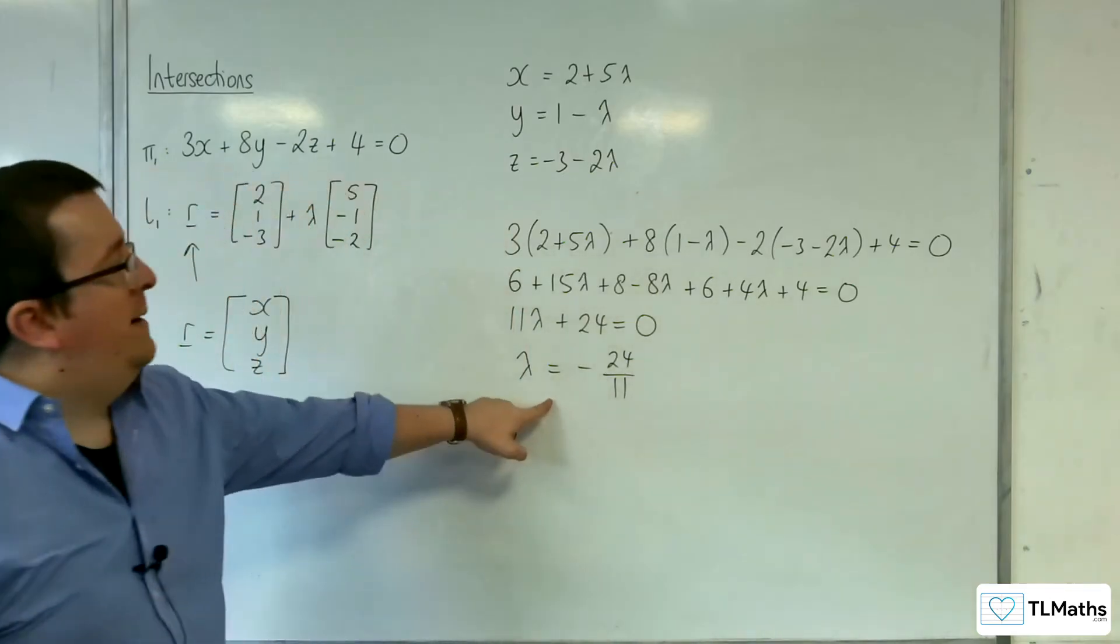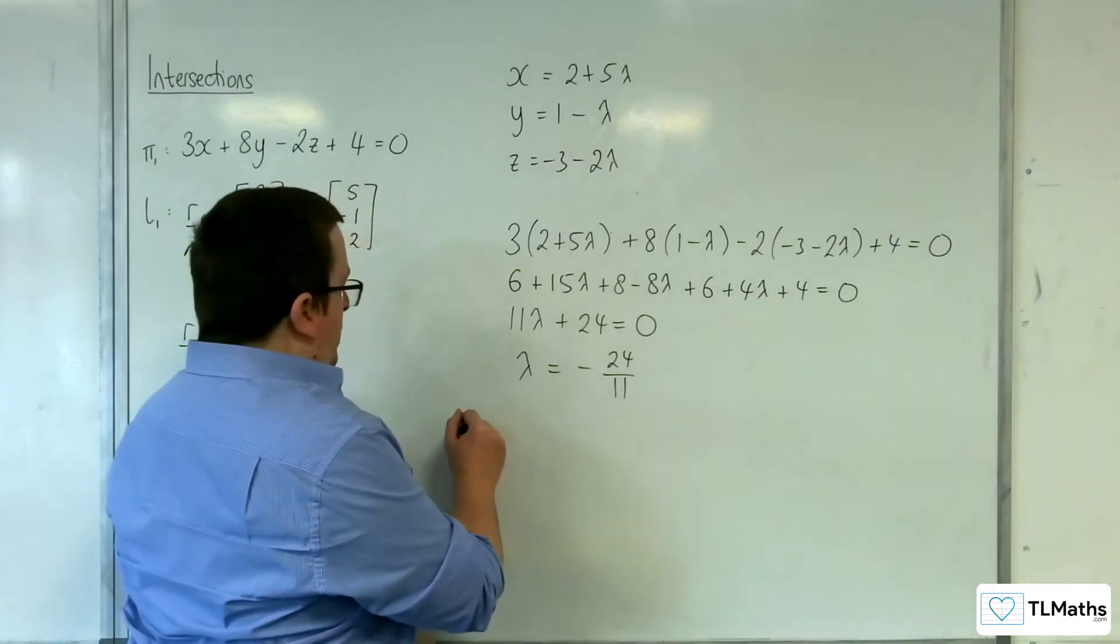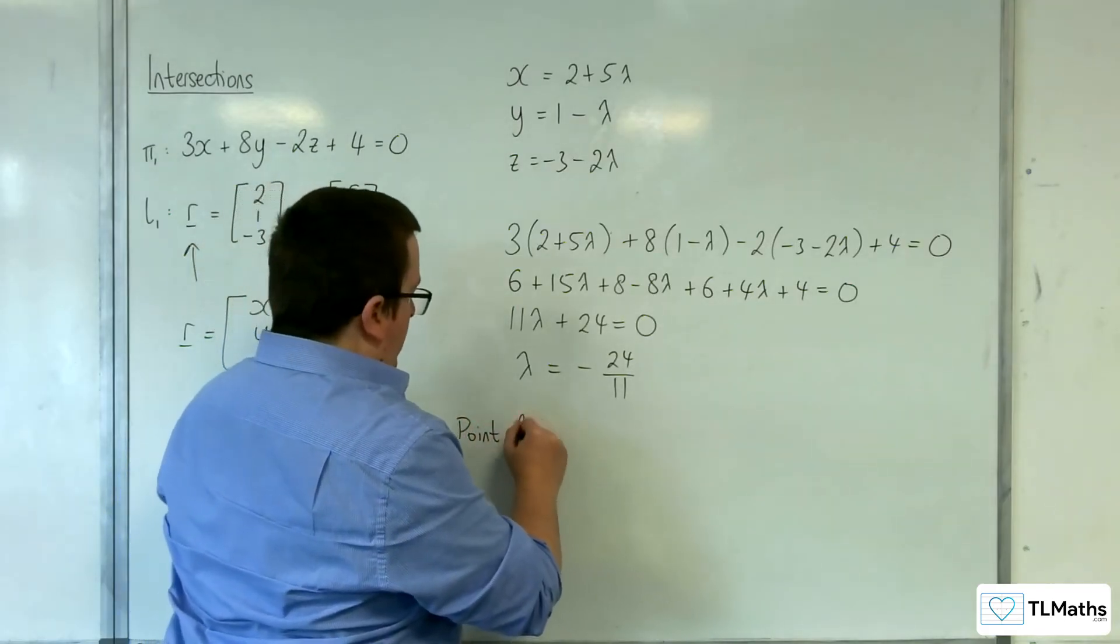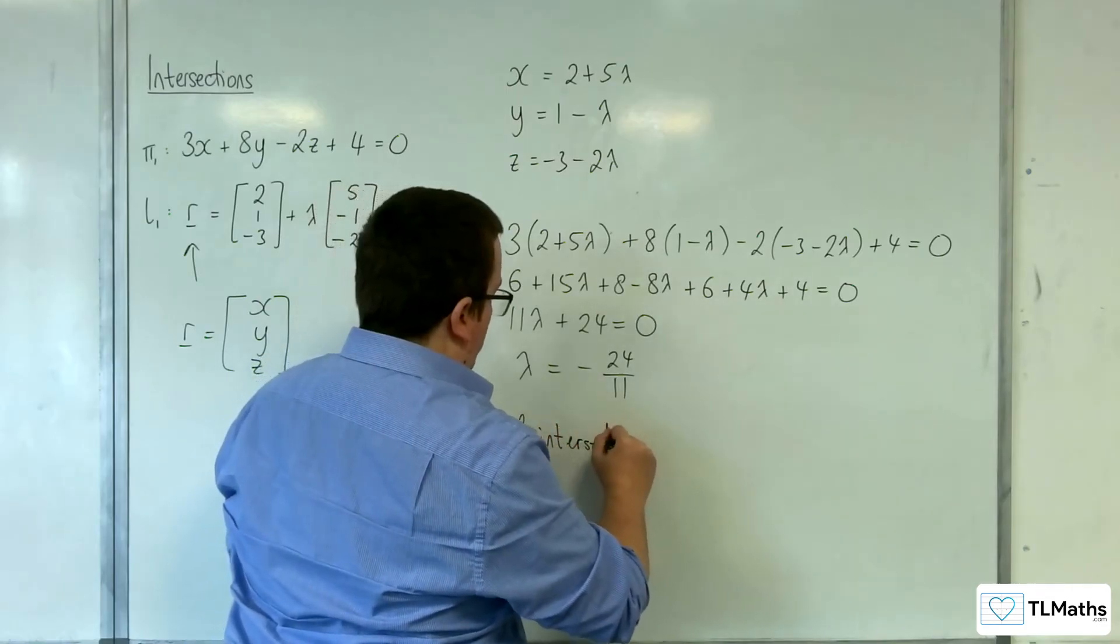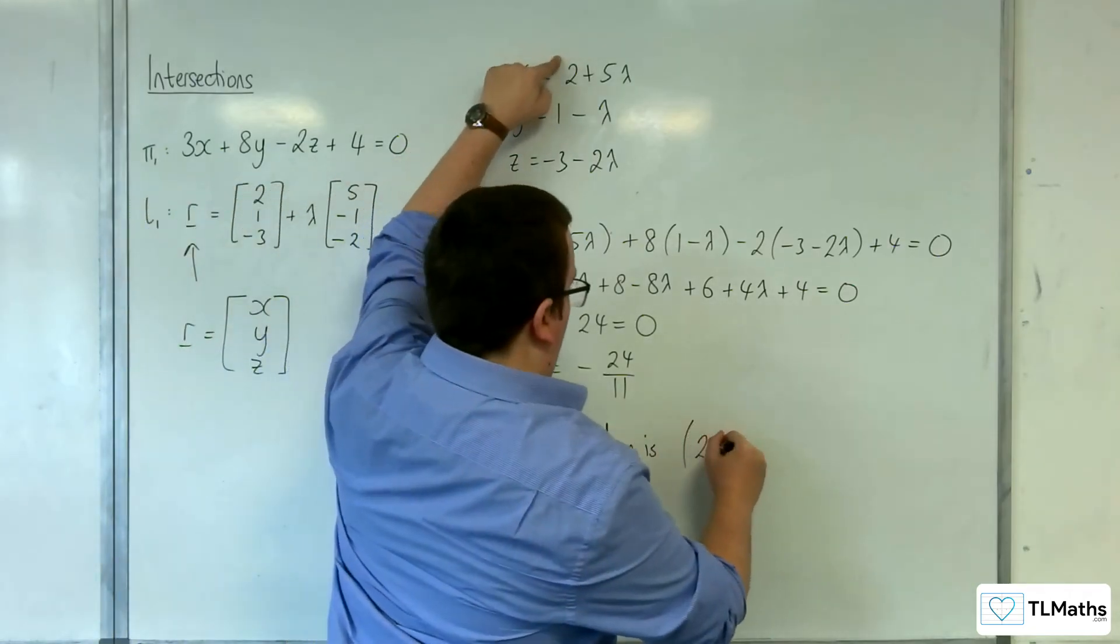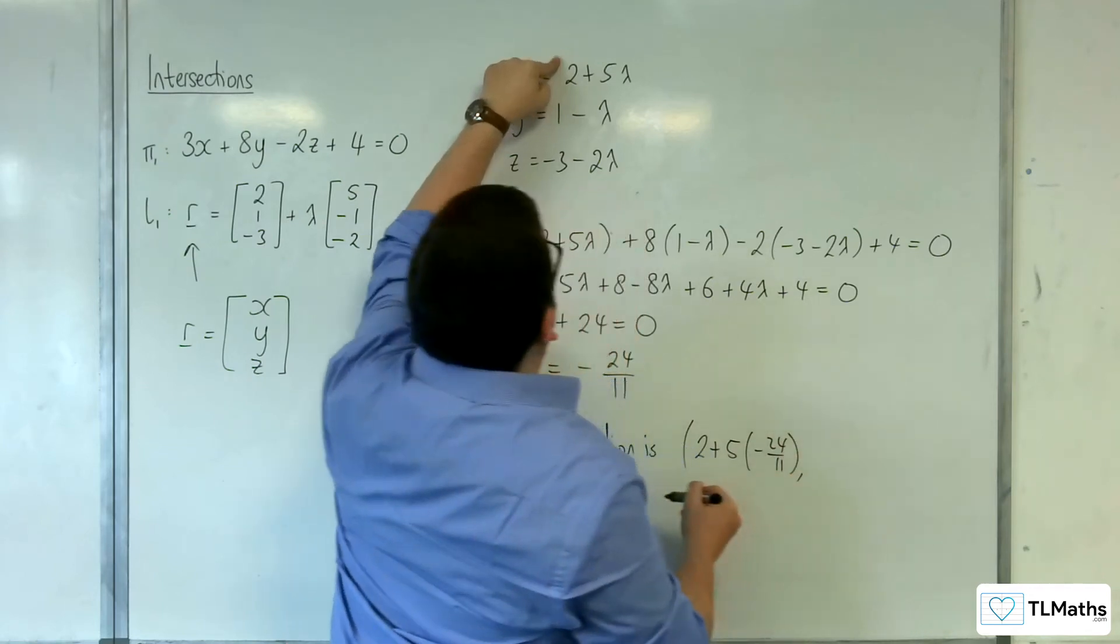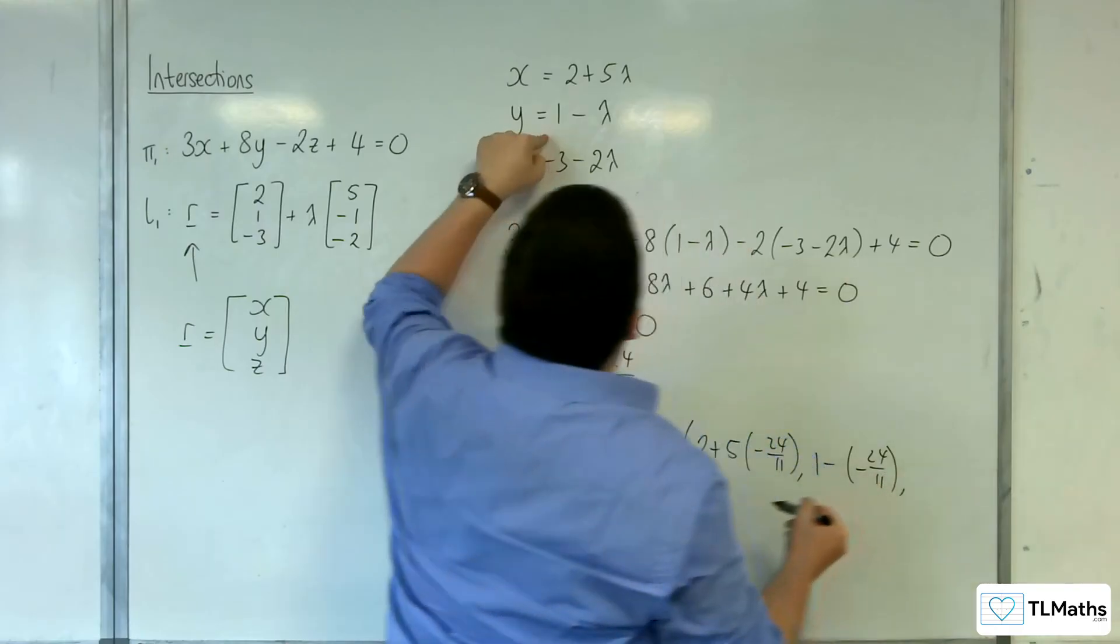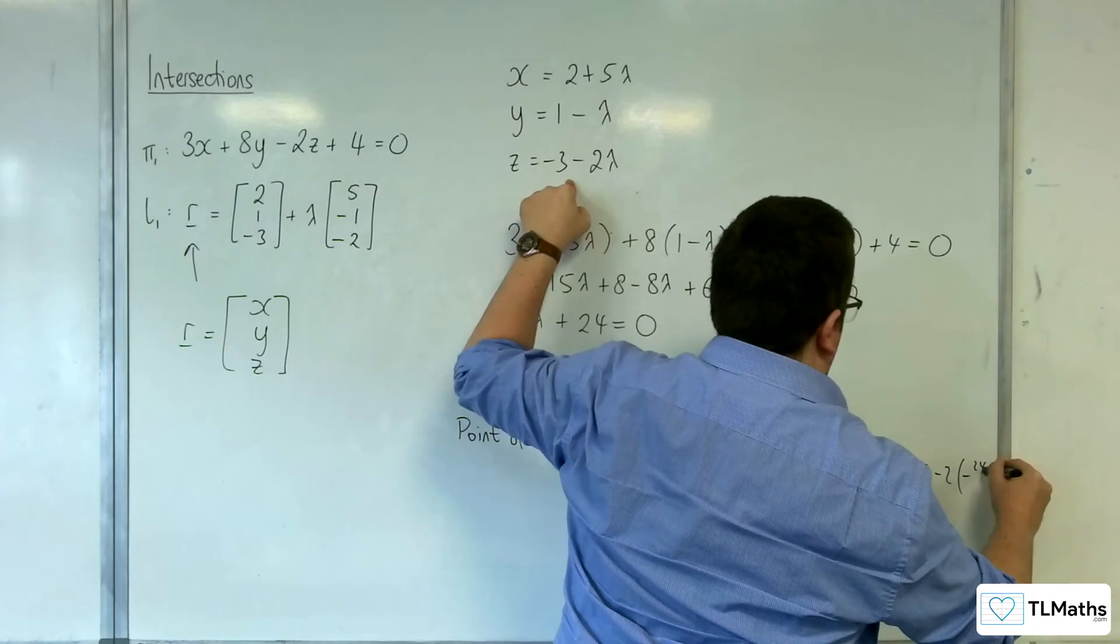So that's the value of lambda. So I just need to now substitute it in here to work out the point of intersection. So point of intersection is, we'll have 2 plus 5 lots of minus 24 11ths, 1 take away minus 24 11ths, minus 3 take away 2 lots of minus 24 11ths.